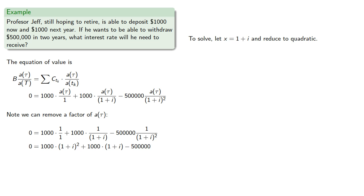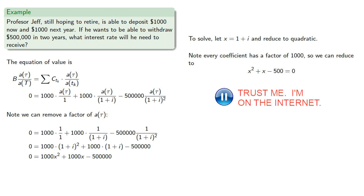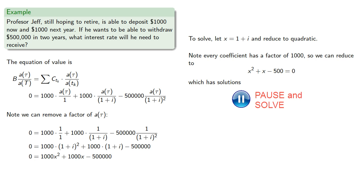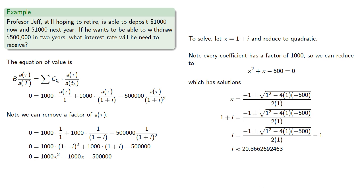To solve this equation, we'll let x equal 1 plus i, and reduce it to quadratic. Now, we note every coefficient has a factor of 1,000, so we can reduce our equation, which has solutions, and so Professor Jeff needs to find a fund giving 2087% interest each year.